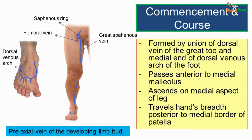The great saphenous vein is the pre-axial vein of the developing limb bud and it is the longest superficial vein in the body. It is formed by the union of the dorsal vein of the great toe and the medial end of the dorsal venous arch. This picture shows us the dorsal venous arch and the formation of the great saphenous vein by the dorsal vein of the great toe and the medial end of the dorsal venous arch.